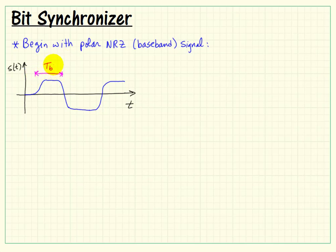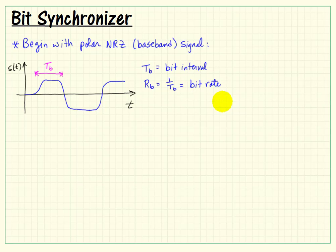A little bit of notation here. We have the bit interval, T sub B, and the bit rate would be the reciprocal of the bit interval, and I'll call that R sub B.